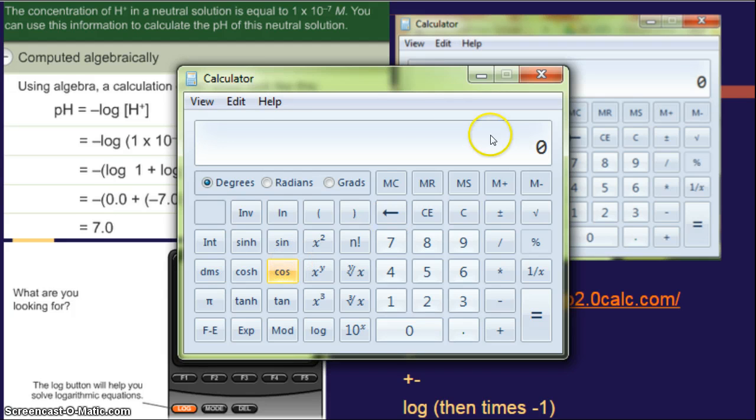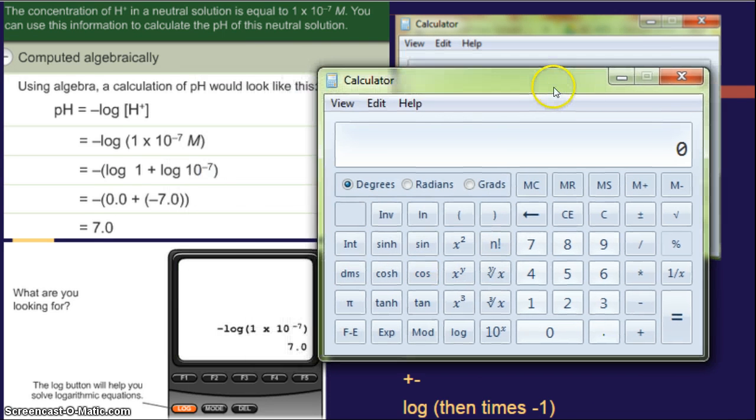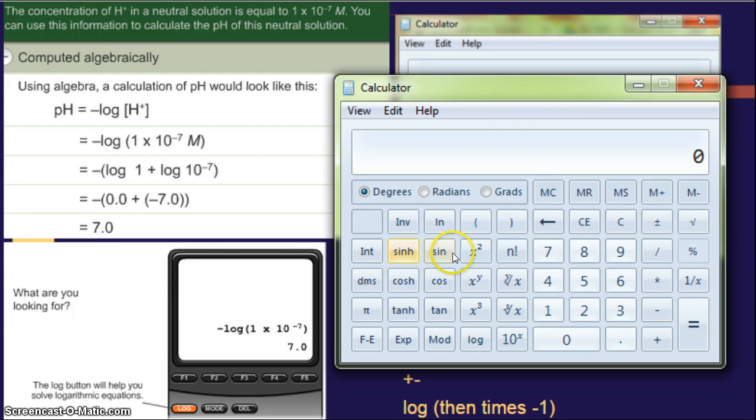So how we do that is if I wanted to type in 10 to the negative 7, I would type in 10 to the, which would be x to the y. I would type in 7, then I would hit the negative button, and then I always hit the plus button just to make sure I got it. Okay, yeah, it should be a big decimal.